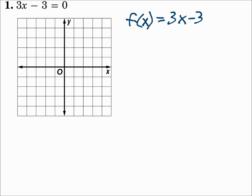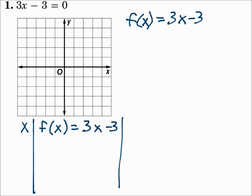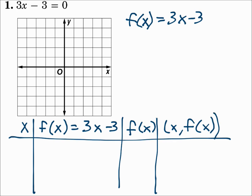Now make a table with an x column, an f of x equals 3x minus 3 column, and then an f of x column. Finally, an x comma f of x column. Remember, f of x is the same as y. So you have x values, substitute them in, solve for the y's, and then you have a set of points, x comma y. We use f of x because we know this is a function.